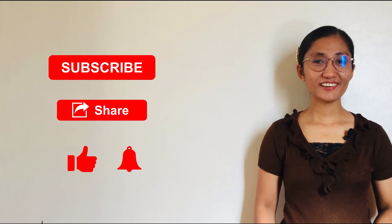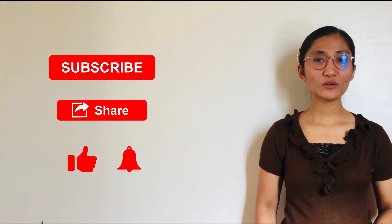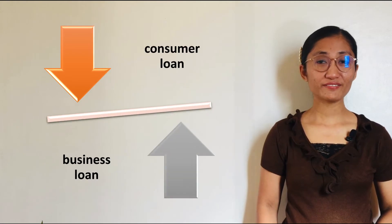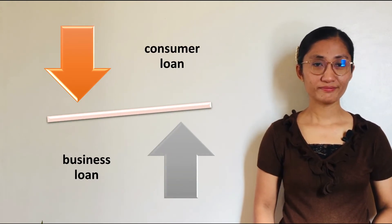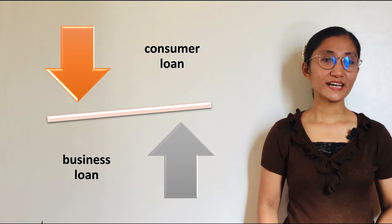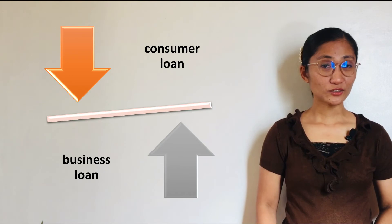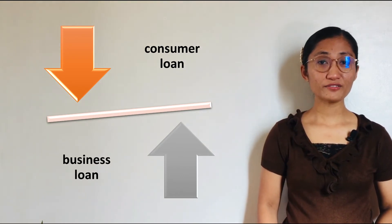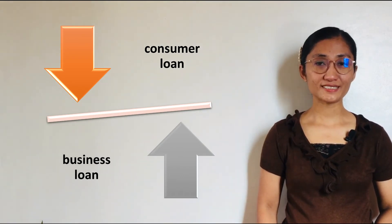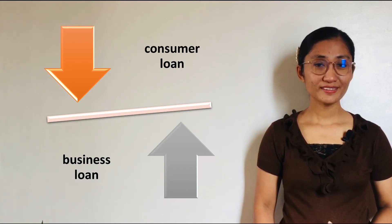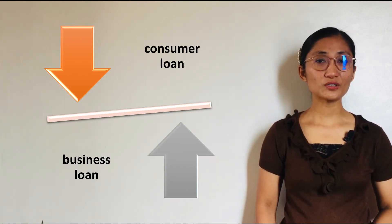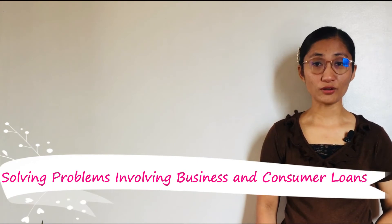Hello everyone, I'm teacher Nev, and welcome back to our general math tutorials. In the previous lesson, you learned how to distinguish a business loan from a consumer loan. Basically, a business loan is used for business purposes, and the consumer loan is for personal or family purposes. While you have knowledge of these two types of loans, in this lesson we will focus on solving problems involving them.